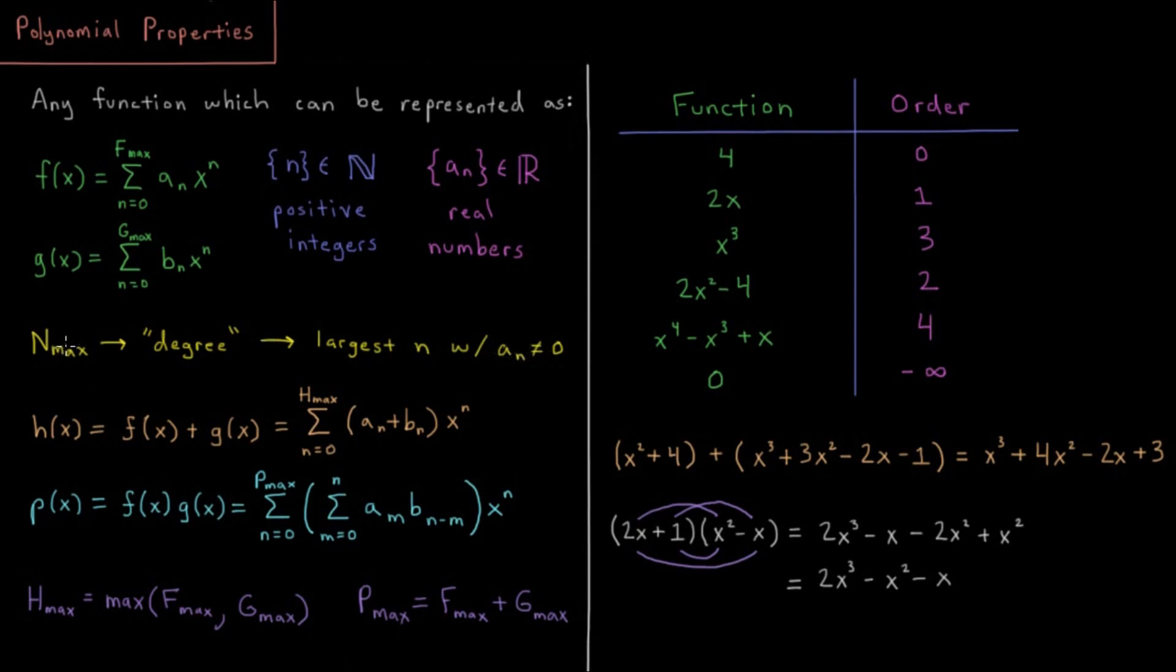So those are polynomials. What can I do with these? Well, I can add them to each other. So if I wanted to add two polynomials, f and g, I could create a new polynomial called h, and that would be a sum from 0 to h max of each coefficient of a and b from the functions f and g, and then times x to the n as I go.